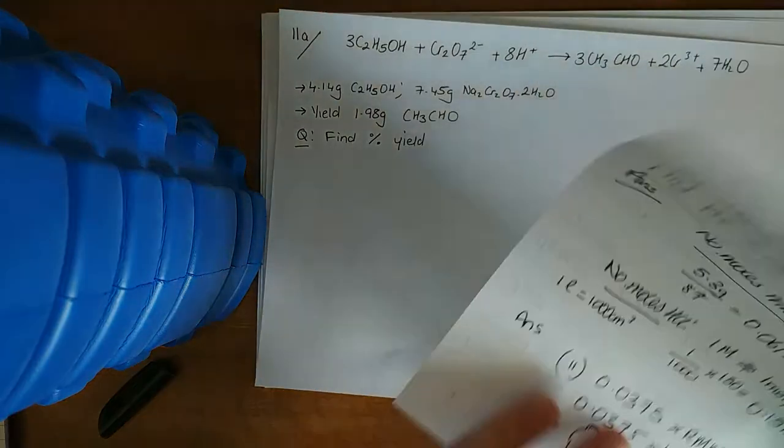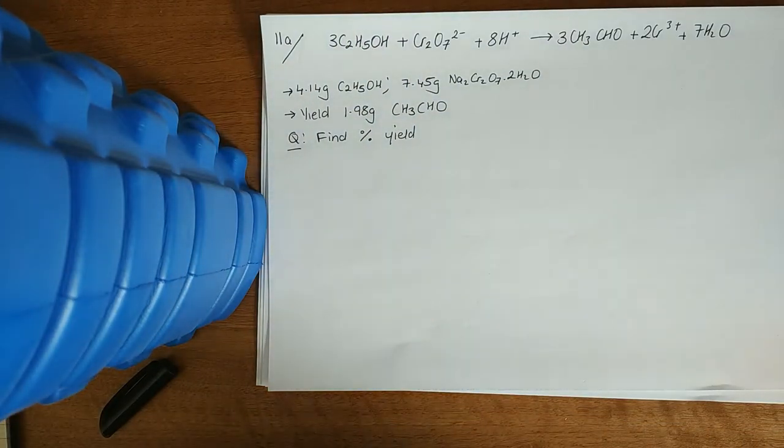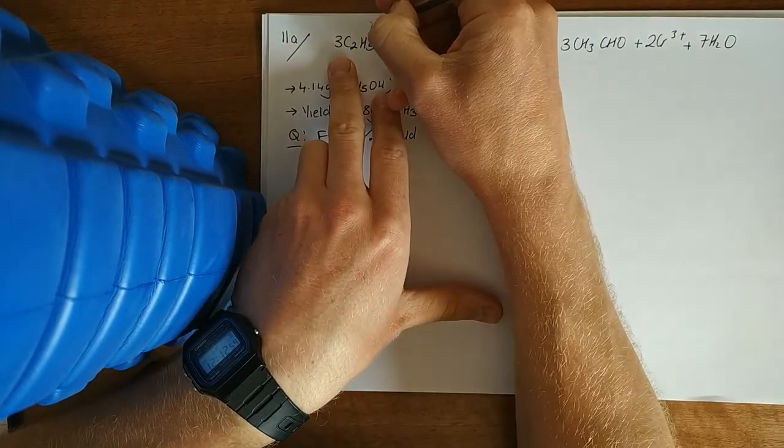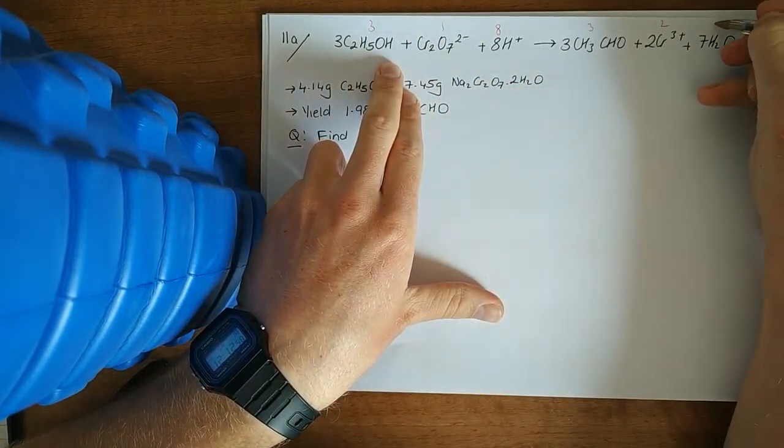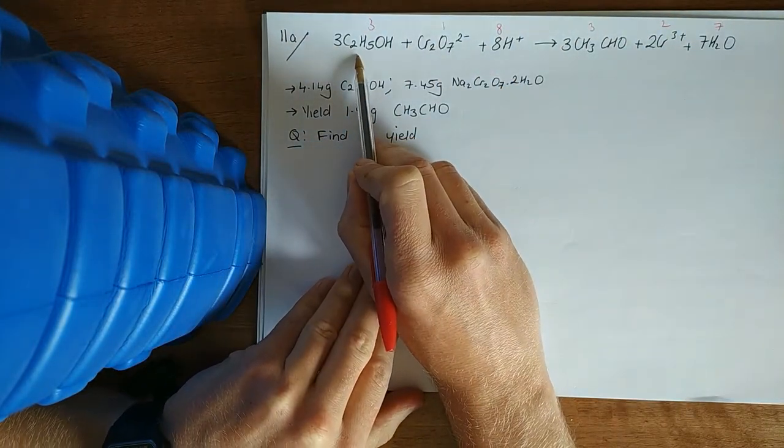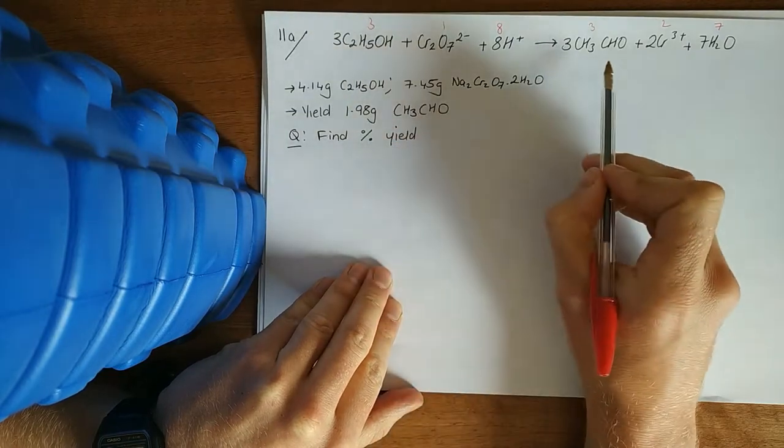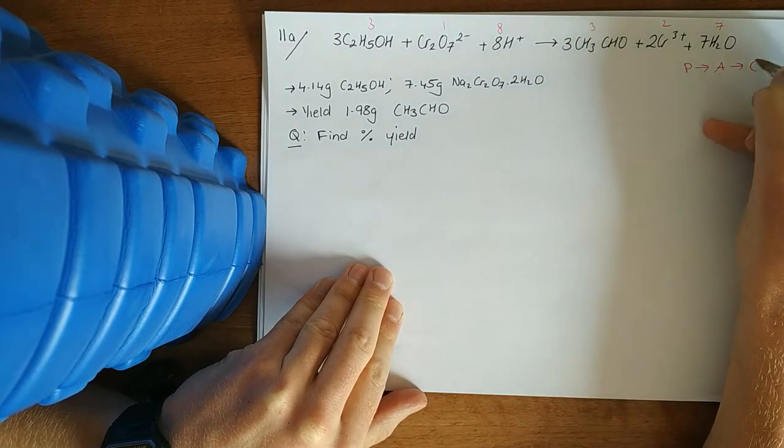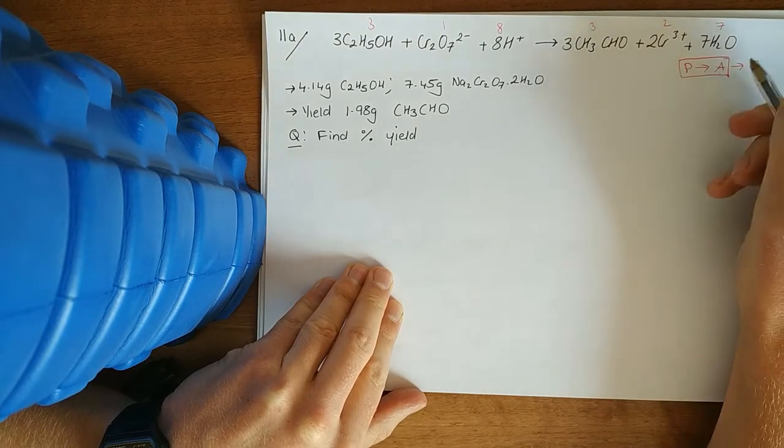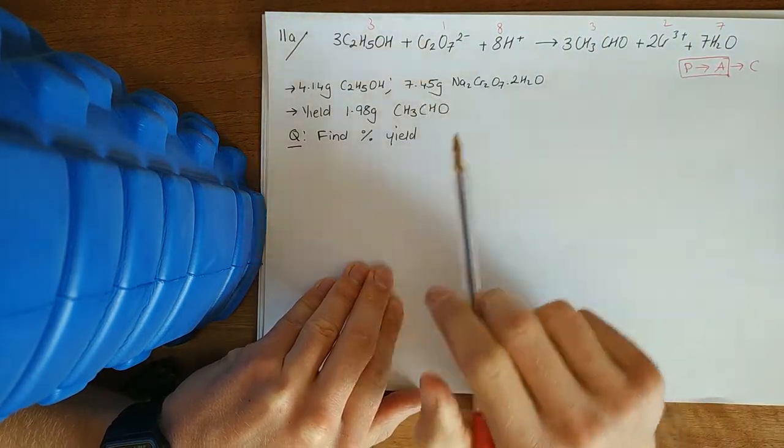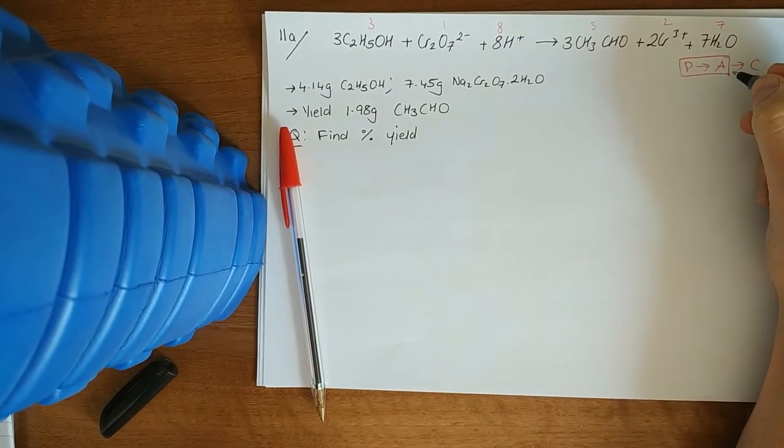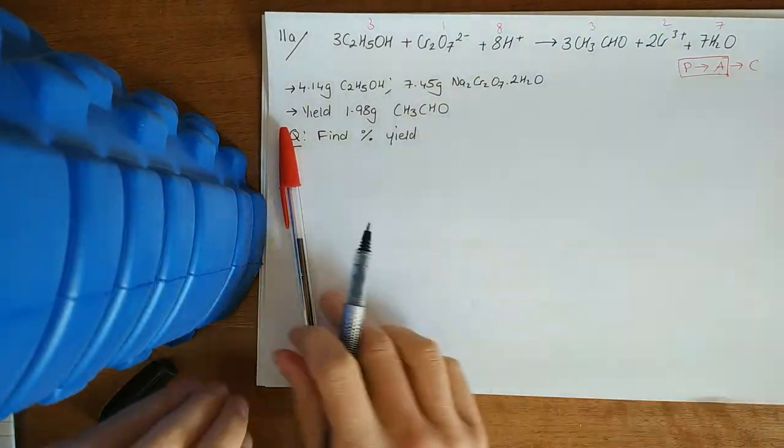And then 11A was also another limiting and excess. So this is the equation they give you here. It's 3, 1, 8, 3, 2, 7. And what you're looking at is the oxidation of a primary alcohol, ethanol, into ethanal. Now this is part of your oxidation series. PAC. Primary alcohol, aldehyde, carboxylic acid. We're stopping here because we don't have an excessive amount of oxidizing agent. And your Cr2O7. So it doesn't go complete oxidation here. It stops at your aldehyde. The H+ just stands for your acid.